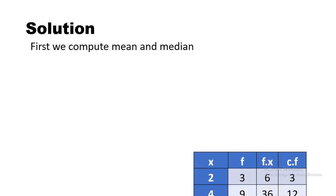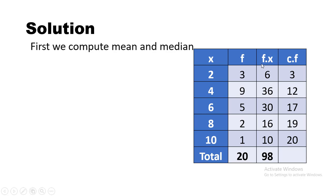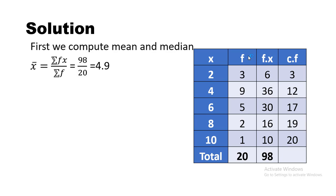The first step is to find the mean value and median value from the data. To find the mean, the formula is X̄ = ΣFX / ΣF. In the table I have calculated FX: 2×3=6, 4×9=36, 6×5=30, 8×2=16, 10×1=10. Adding all those values gives a sum of 98, divided by ΣF which is 20, so 98/20 = 4.9.